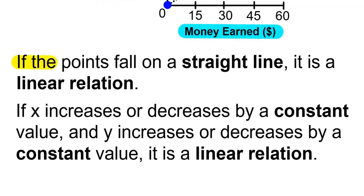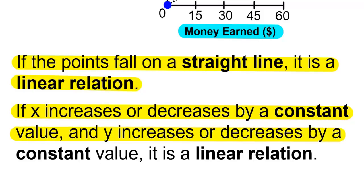If the points fall on a straight line, it is a linear relation. If X increases or decreases by a constant value, and Y increases or decreases by a constant value, it is a linear relation.